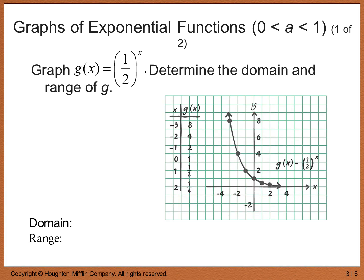For g of x equals 1/2 to the x, where the base is between 0 and 1, the graph is decreasing exponentially. It still goes through the y-intercept (0, 1). The domain is still all real numbers, and the range is still 0 to infinity, since the graph also approaches the x-axis from above.